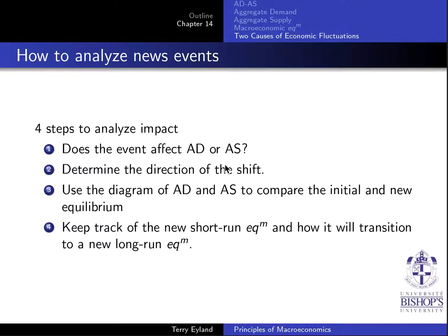We're going to look at different causes of economic fluctuations. Starting from a long-run equilibrium situation, there are two main things that will shift us away from that equilibrium. The LRAS we'll treat as fixed, so we have two curves. The two main things that can shift are either the aggregate demand curve, left or right, or the aggregate supply curve, left or right.